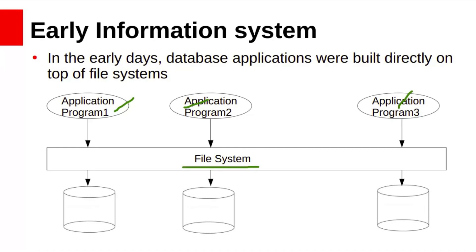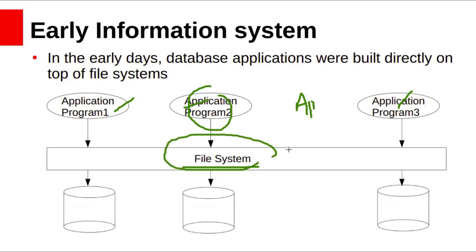There were separate programs to add new students and courses, to generate grade reports, and to assign grades and GPA to students. New application programs were added to the system as the need arose. For example, suppose a university decides to add a new branch, say Computer Science. As a result, the university creates a new department and creates new files or adds information to existing files, and may need new application programs to deal with the new files related to the Computer Science branch.